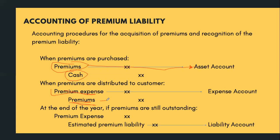At the end of the year, if premiums are still outstanding — take note, premium liability is considered an estimated liability. We estimate, for example, that only 60% of the wrappers will be redeemed. So we need to account for the balance not yet redeemed at year-end. The entry is: debit premium expense account, then credit estimated premium liability account.